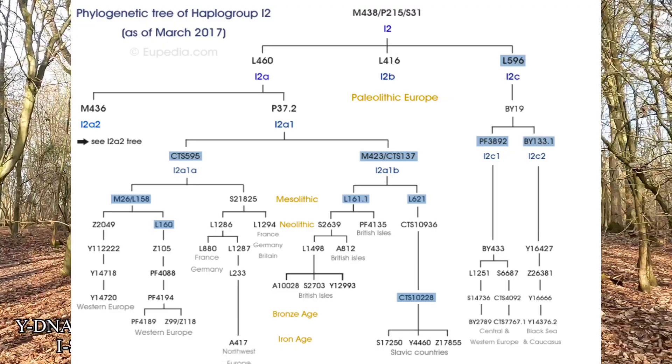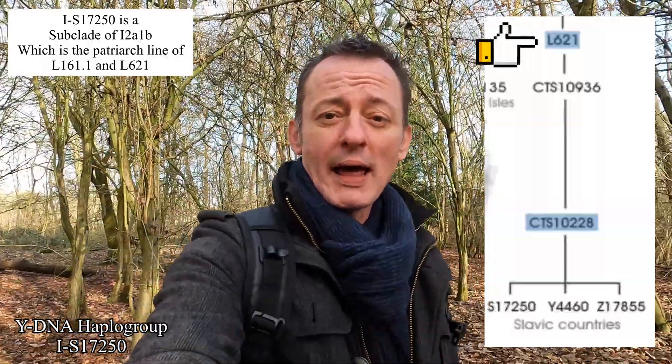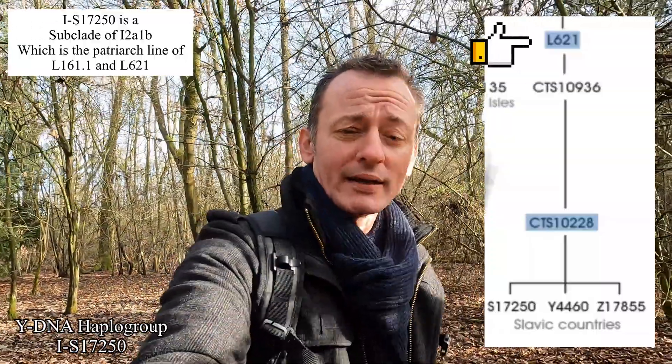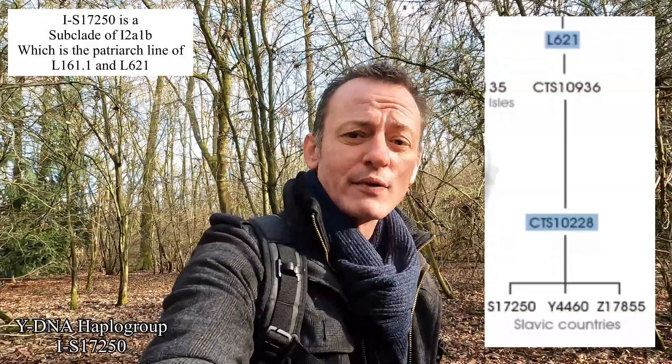Haplogroup I2A1B L621 — this branch is found overwhelmingly in Slavic countries. Its maximum frequencies are observed among the Dinaric Slavs: Slovenes, Croats, Bosniaks, Serbs, Montenegrins and Macedonians, as well as in Bulgaria, Romania, Moldavia, Western Ukraine and Belarus. It is also common to a lower extent in Albania, Greece, Hungary, Slovakia, Poland and South Western Russia.